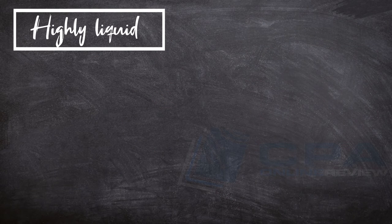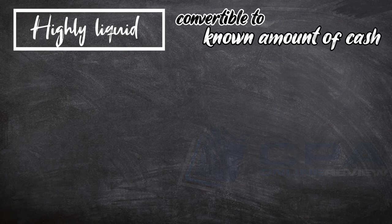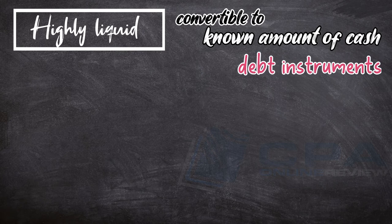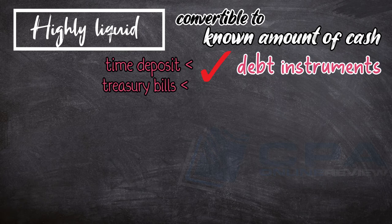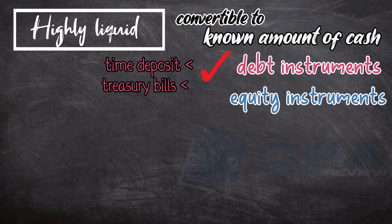Highly liquid means that the instrument is convertible into a known amount of cash. This is the case for debt instruments, where the principal amount and the interest thereon are collectible. On the other hand, equity instruments do not qualify as cash equivalents — they do not represent a fixed amount of cash, and they do not have a maturity date.